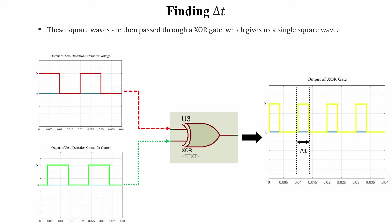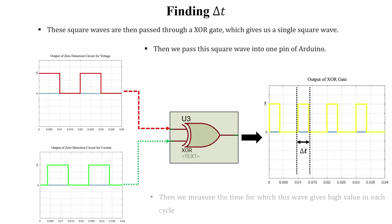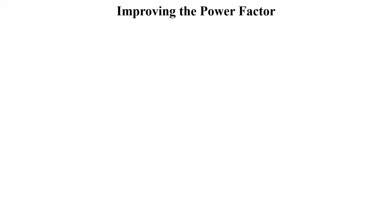We pass these two square waveforms through an XOR gate and get a single square wave output. The output gives a positive 5V for the time duration when either current or voltage is zero and the other has some value. This time duration is delta t. We feed this XOR gate output into a pin of the Arduino, which then measures the time duration for which this square wave gives a positive 5V — that is the delta t.